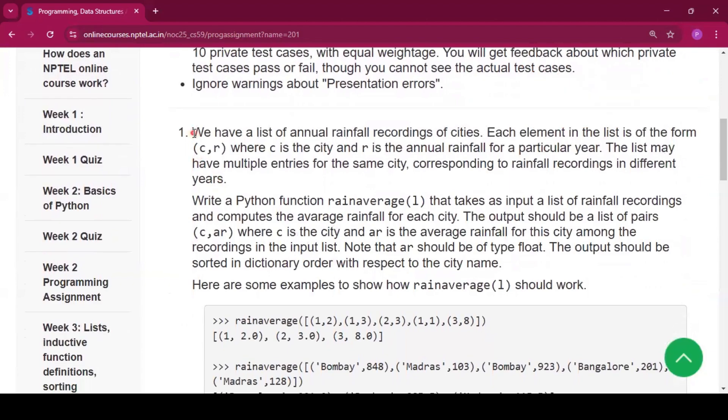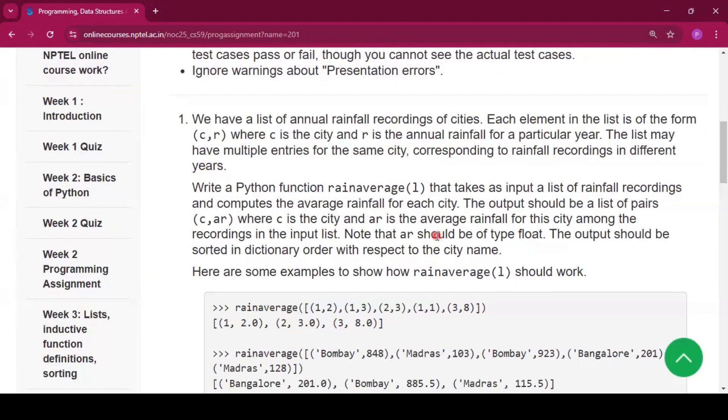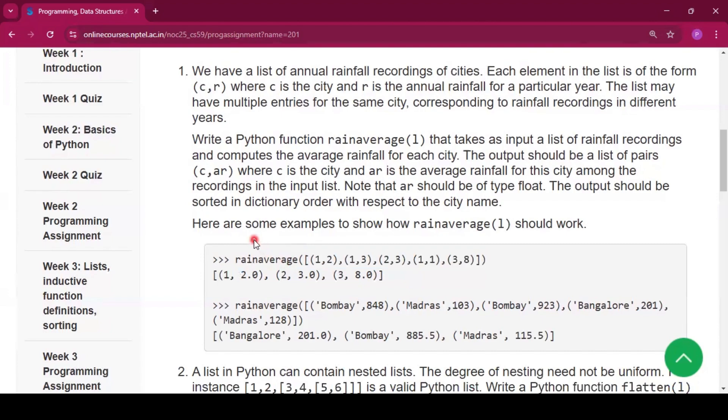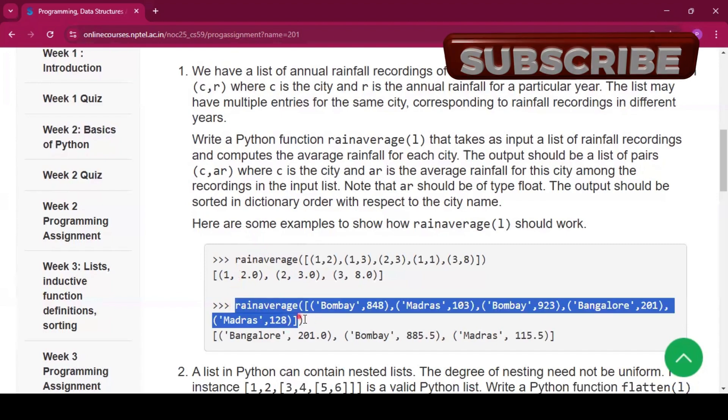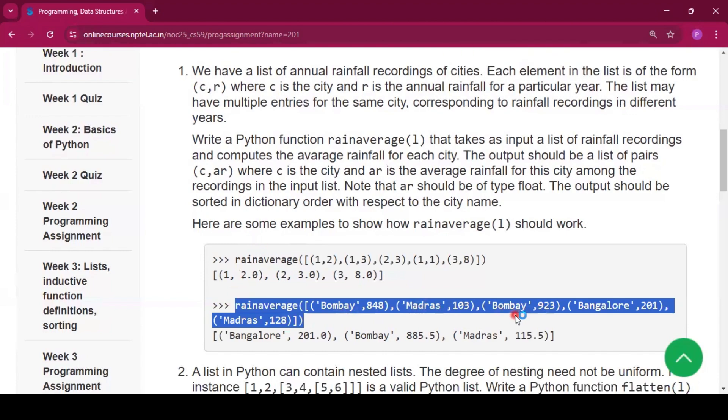Now in the first function we have a list of annual rainfall recordings of cities. Each element in the list is of the form (C, R) where C is the city and R is the annual rainfall of a particular year. We have to write one function called rainaverage which will calculate the average of the rainfall. Suppose here you see there is different cities name: Bombay, Madras, again Bombay, then Bangalore, Madras.